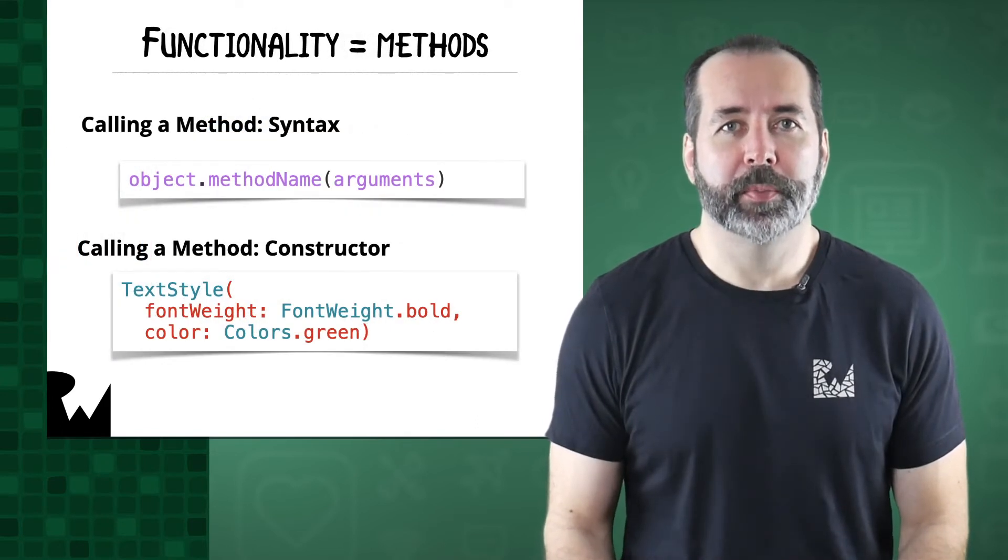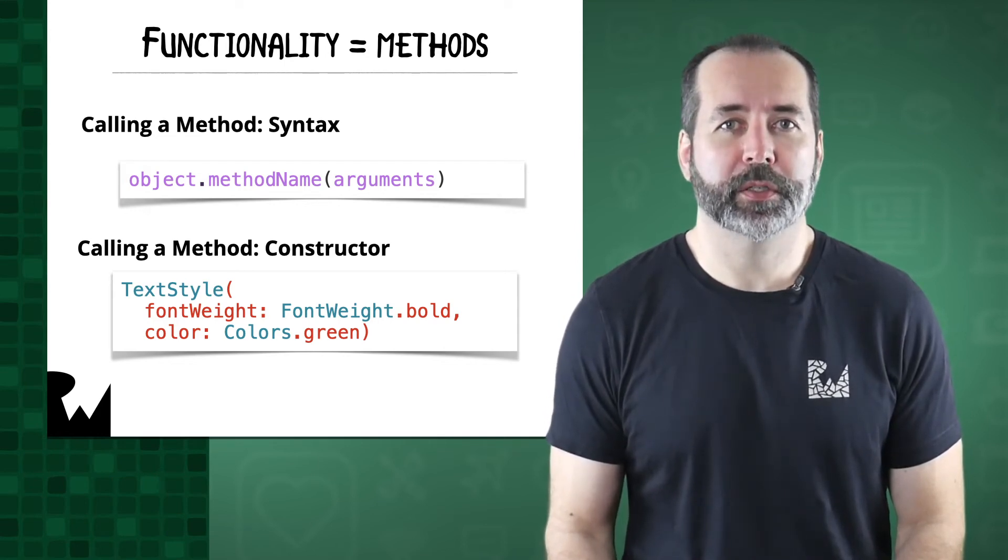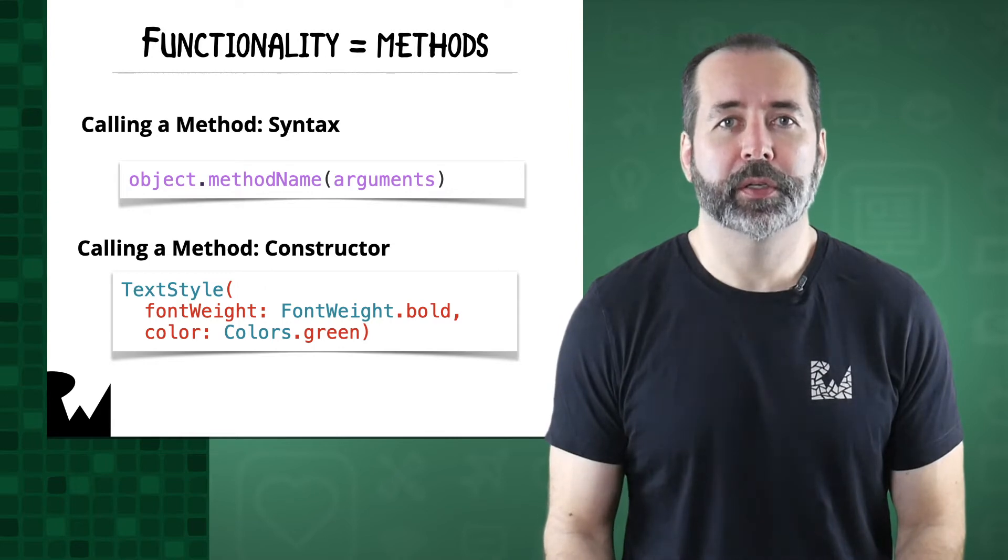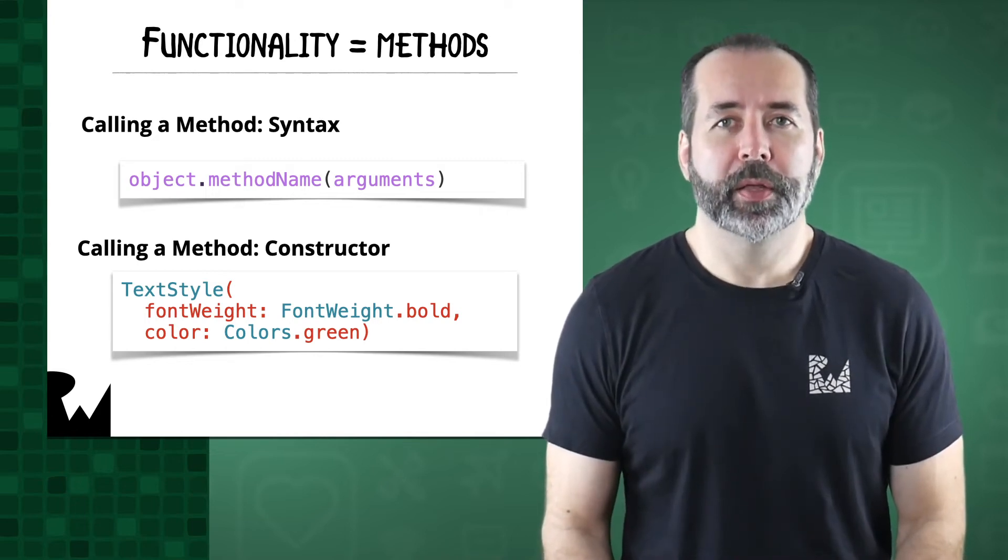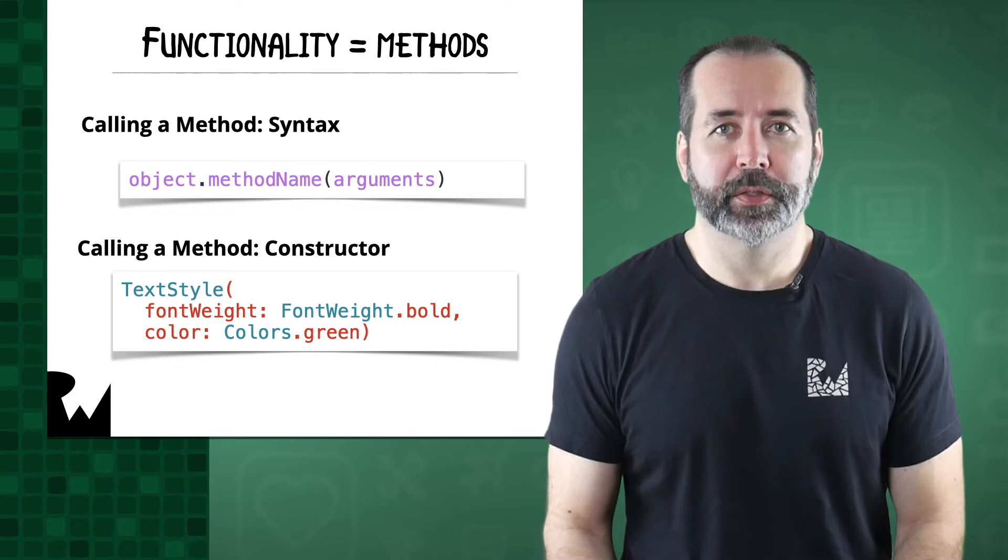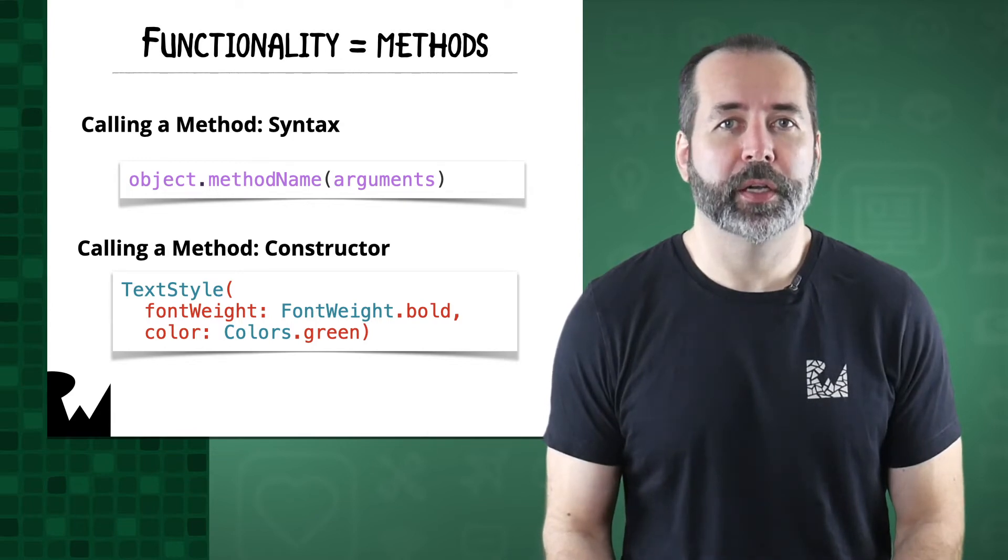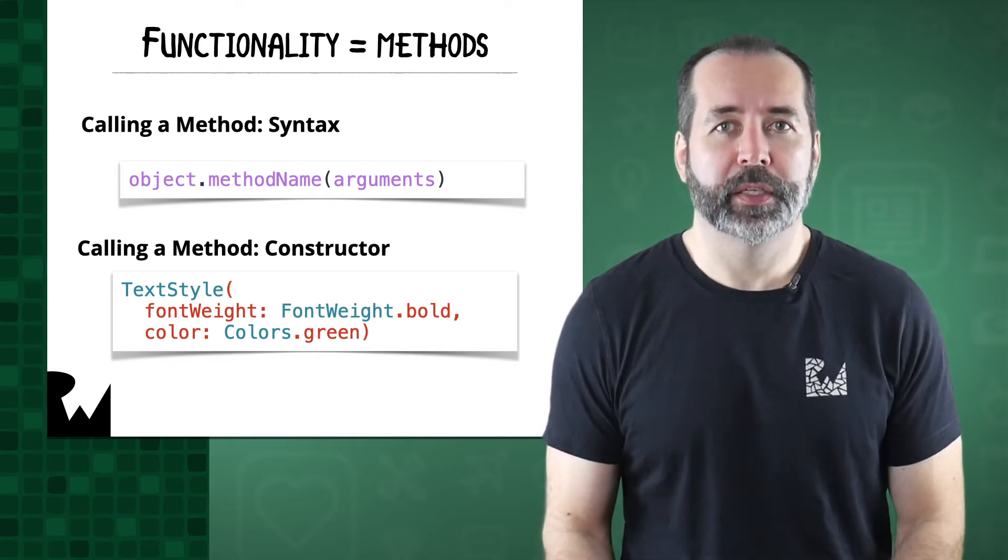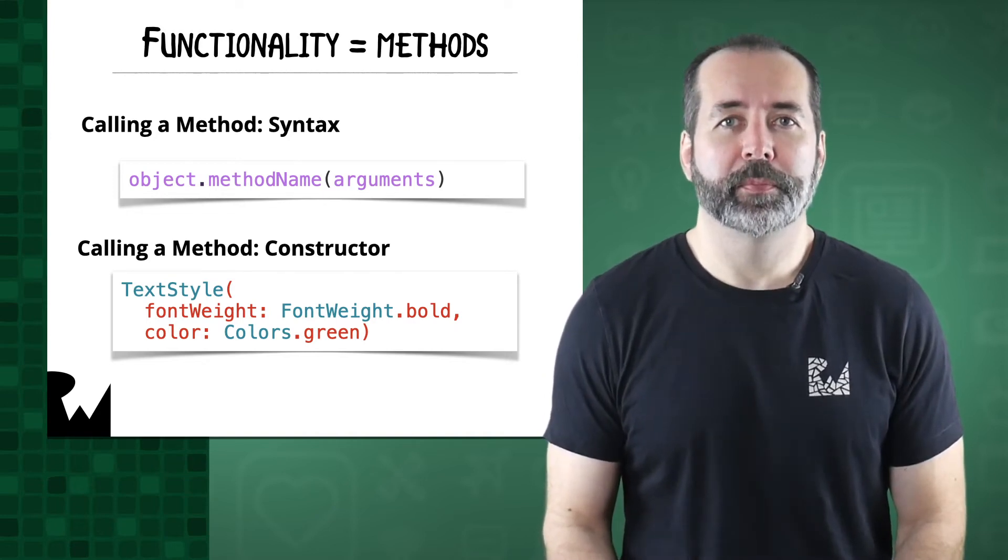The thing that provides functionality to an object is commonly called a method. Other programming languages may call this a procedure, or a subroutine, or a function. A method is simply a function that belongs to an object. Each class has a special method associated with it called a constructor. A constructor is what you use to create an object instance. If you have an object, you call a method on it by appending a dot in the method name and enclosing any arguments you need to send to the method in parentheses. The arguments can have their associated names as prefixes, like font weight and color shown here in a constructor example. To call a constructor method, you use the name of the class you are trying to create an object of, say TextStyle, and then pass in arguments to the constructor in parentheses.